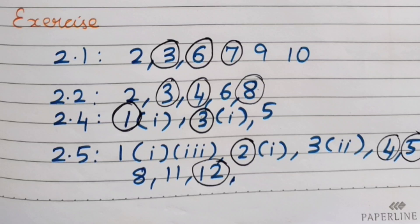3rd question, 2nd subdivision: important numbers are 4th, 5th, 8, 11, and 12. 2nd question, 1st subdivision: important numbers are 4, 5, and 12.